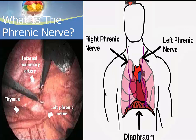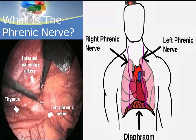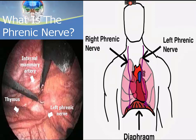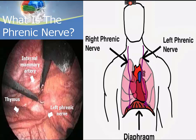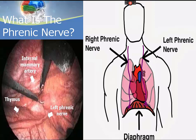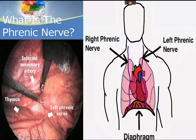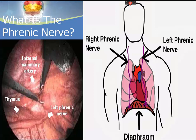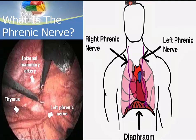Loss of the phrenic nerve on either side results in paralysis of the diaphragm on that side, which leads to less inflation of the lung on that side. Whether this produces respiratory distress, hypoventilation, or hypercapnia depends on the patient's pulmonary physiology — namely, whether they have an underlying COPD, emphysema, bronchitis, or pneumonia.